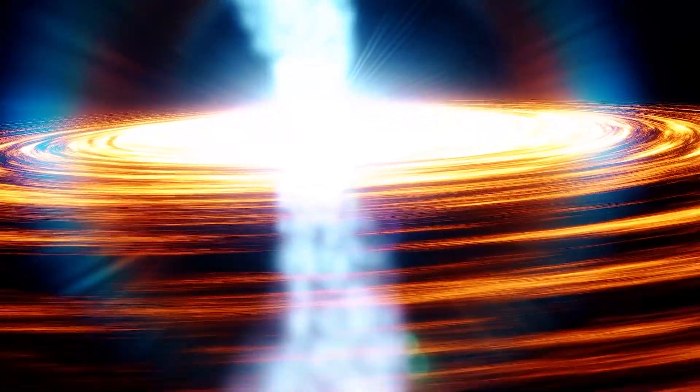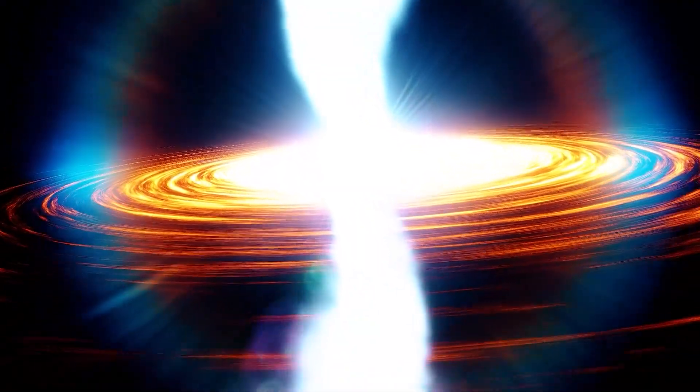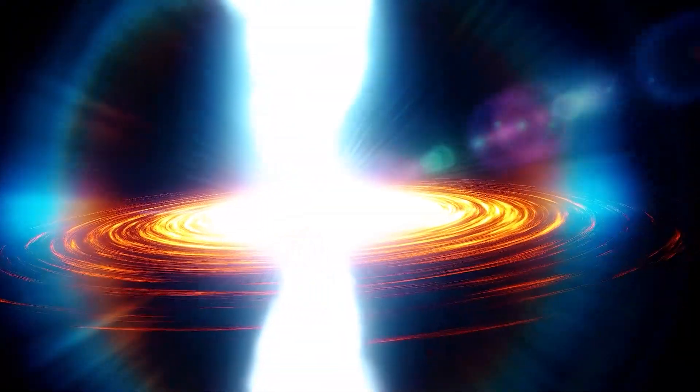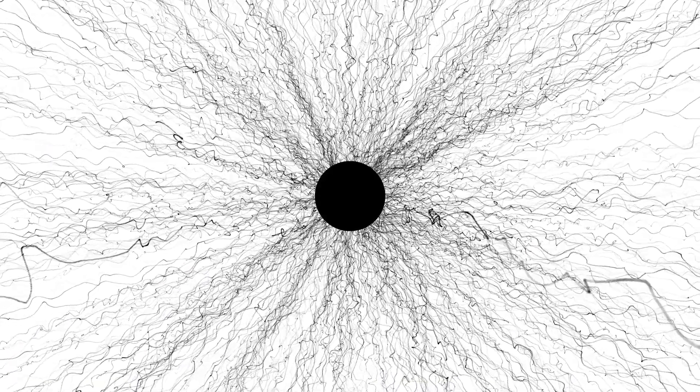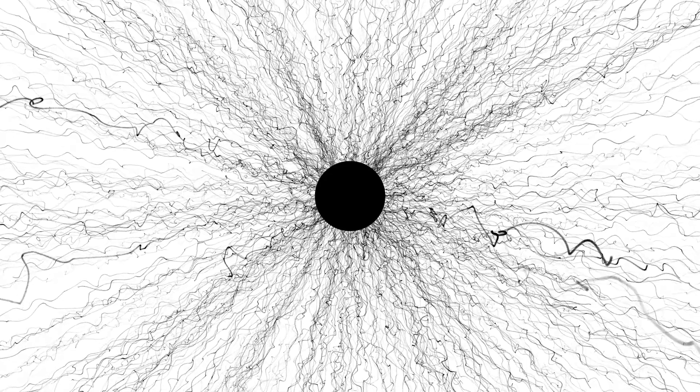The closer they are, the faster they emit gravitational waves, lose angular momentum, and spiral together until collision and merger occur. This forceful collision releases the surge of high-frequency gravitational waves racing through space.